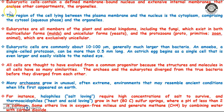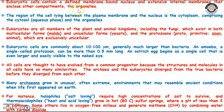So, eukaryotic cell — as the name indicates, 'eu' means true, and 'karyotic' is related to nucleus — so true nuclei-containing cells are eukaryotic cells. They contain a defined, membrane-bound nucleus and extensive internal membranes that enclose other compartments, which are the organelles. So eukaryotic cells have a well-defined nucleus with membrane, along with membranous organelles.